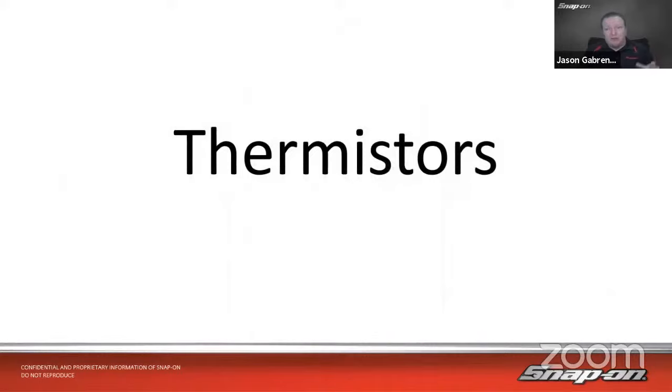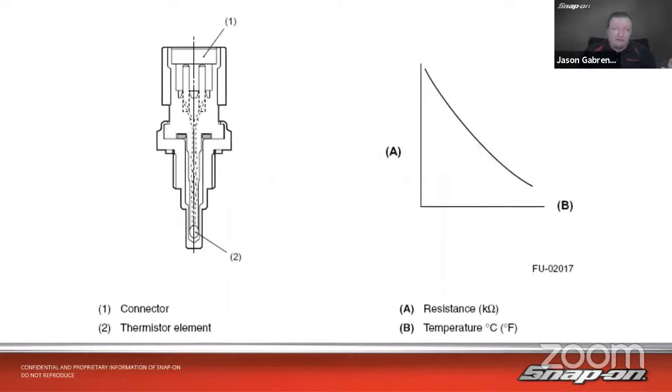So first off, let's talk about those thermistors. Generally speaking, when you're going to run across one of these temperature sensors, you're going to have your connector up on the top, and then inside you're going to have an element that will alter resistance based on temperature. If we look at this simplified graph, my temperature is here on the horizontal and my resistance is going to be on the vertical. So as the temperature increases, the resistance will decrease.